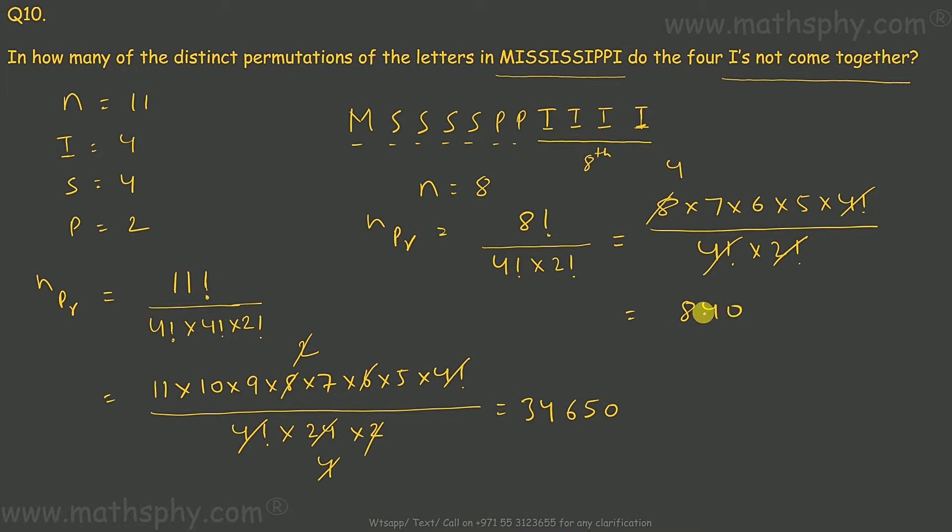Now you see, there would be 840 arrangements where all these four I's will be coming together. If these I's are changing their place within this bunch, we are not concerned about that. Because they will not make any difference into the arrangements.